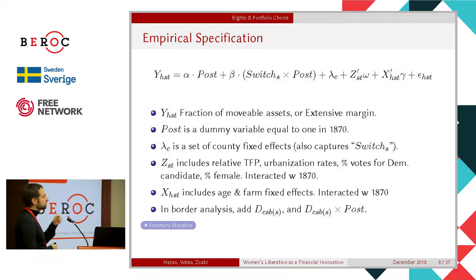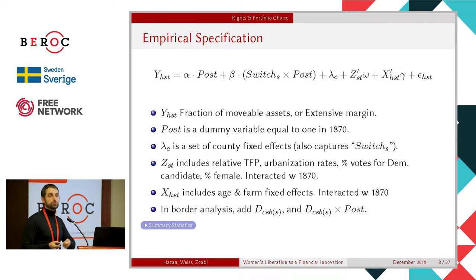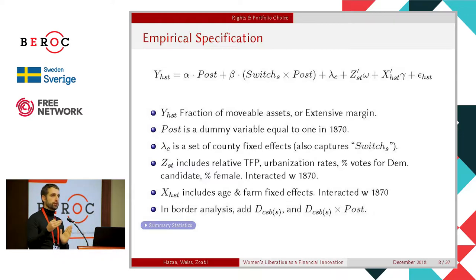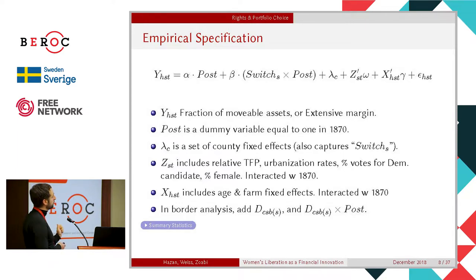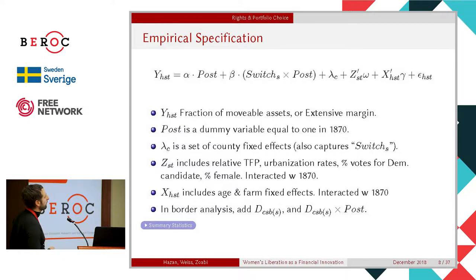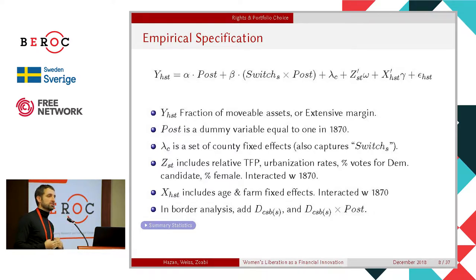In this basic diff-in-diff, 'post' is 1870, and the treatment states are those that granted rights. We control for county-level fixed effects, relative TFP rates between manufacturing and non-agricultural employment, urbanization rates, the political environment — specifically the fraction of votes that went to the Democrat in the previous gubernatorial election — the fraction of the population that is female interacted with the 1870 dummy. Individual controls include age and whether you live on a farm. In the border analysis, we look at a household's distance from a state border interacted with the post indicator — a difference-in-discontinuities approach.